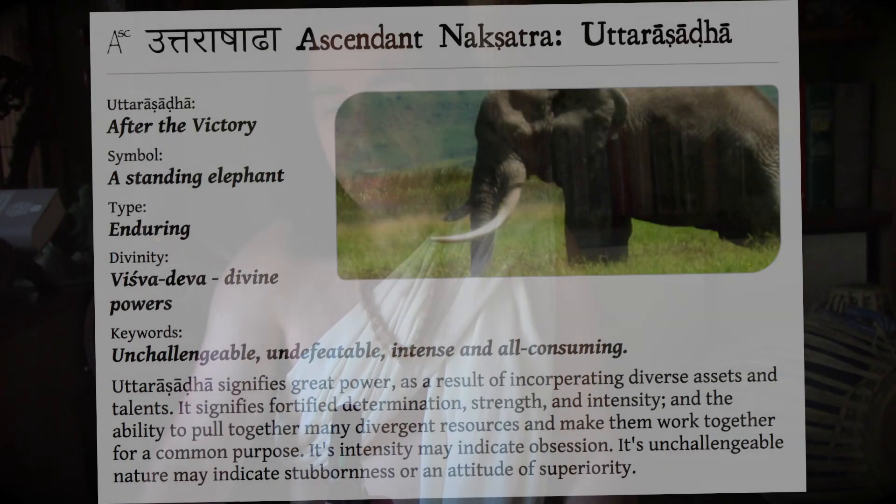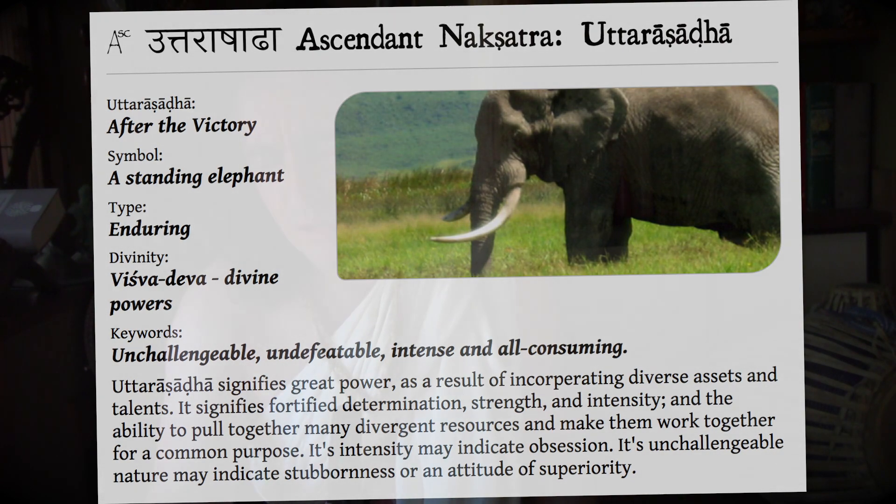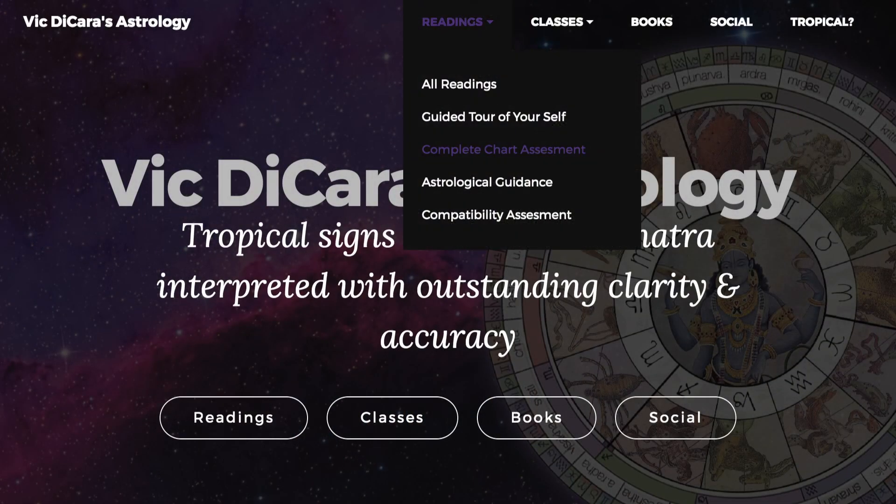Here's the way I present the essential information about the nakshatra in my birth chart reading, which is called the Guided Tour of Yourself for the complete birth chart analysis. You can get a copy of this for your own chart from my website at vikdikara.com/r2. First, it shows you what the name means. Uttarashada means the fulfilling of desires — achieving a goal, achieving a victory. Uttara means later on. So it's what happens after achieving a victory: you have to consolidate power and maintain your success.